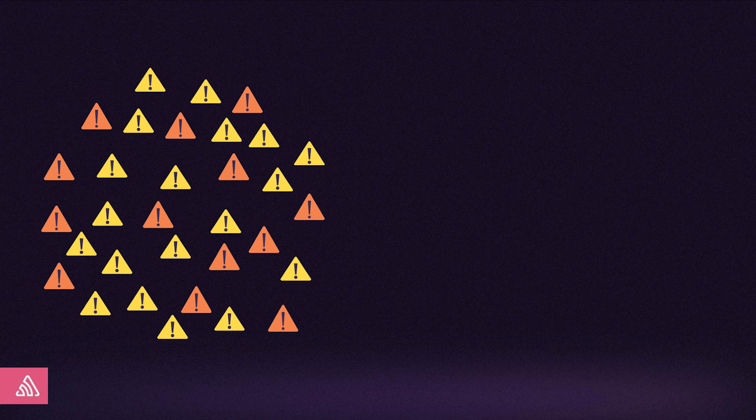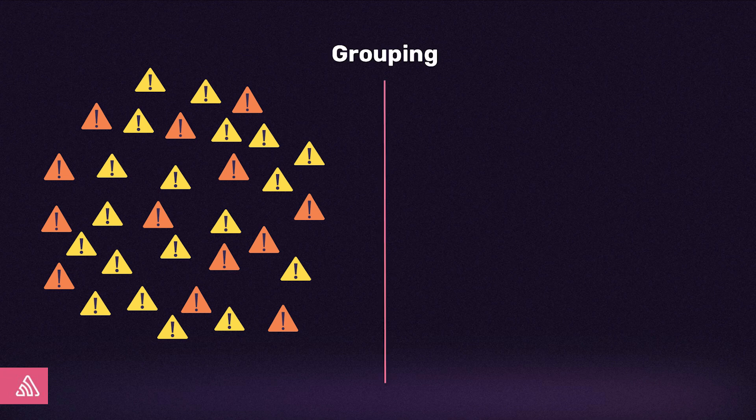First, let's cover how we'll be applying ML to something that's core to errors in Sentry: grouping. Grouping transforms the firehose of errors data sent to Sentry into an actionable list of issues. We accomplish this by fingerprinting error events, or determining what bits and pieces of a stack trace are relevant for uniquely identifying them. However, it's not perfect.